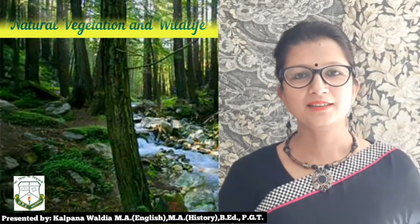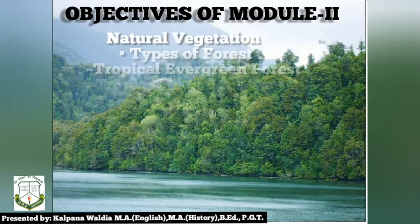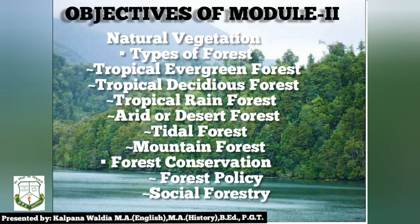Hello dear children, welcome back. Let us see the objective of Module 2. In this module we are going to understand the types of forests under natural vegetation: tropical evergreen forest, tropical deciduous forest, tropical rainforest, arid or desert forest, tidal forest, and mountain forest. Thereafter we will see forest conservation — its meaning and the forest policies made by the government. At last we will end this session with the topic of social forestry.